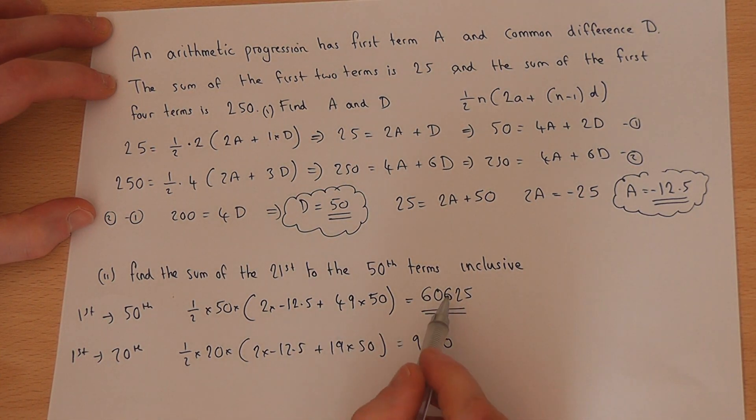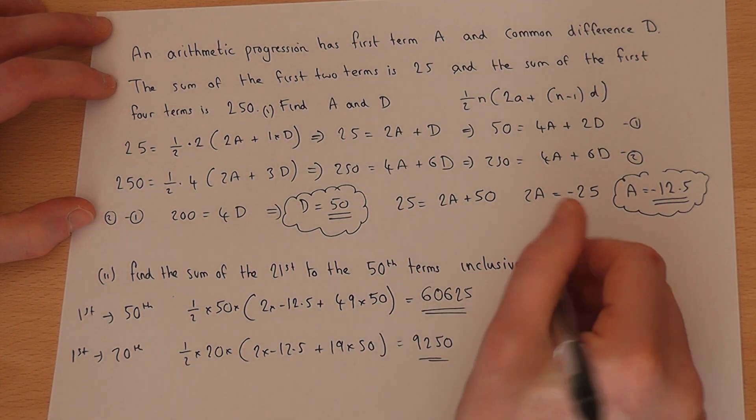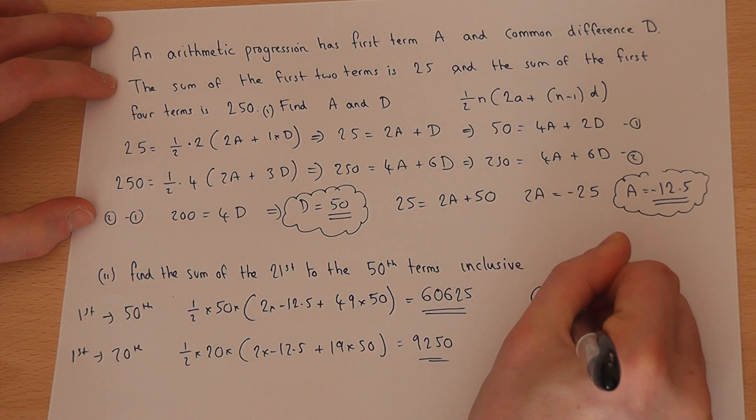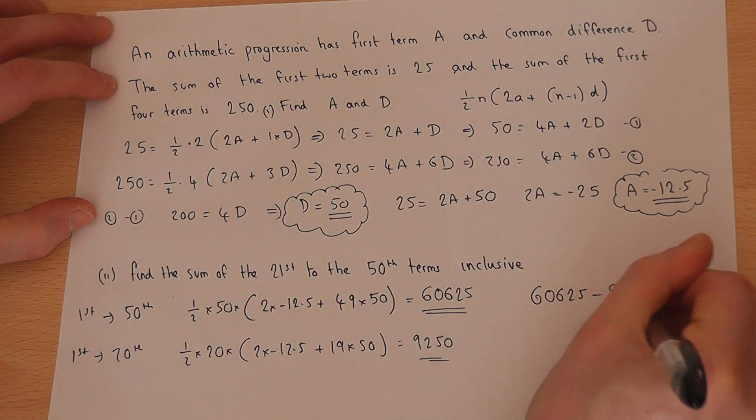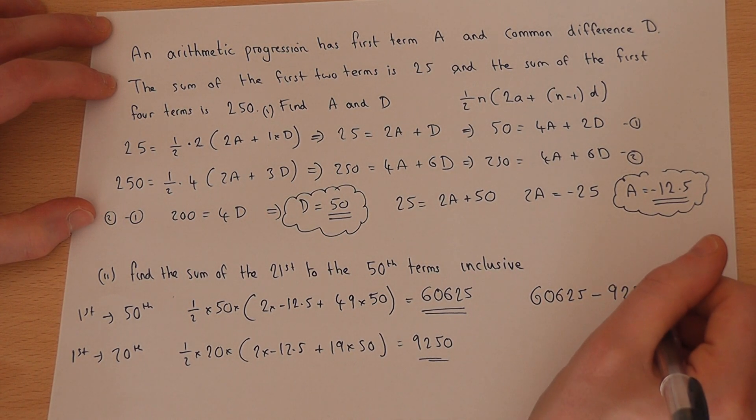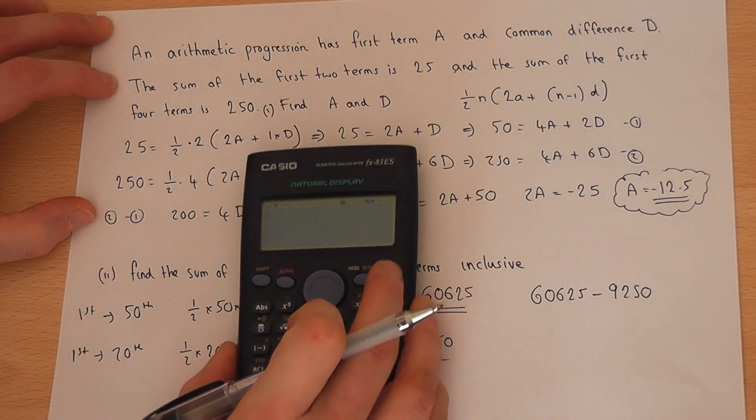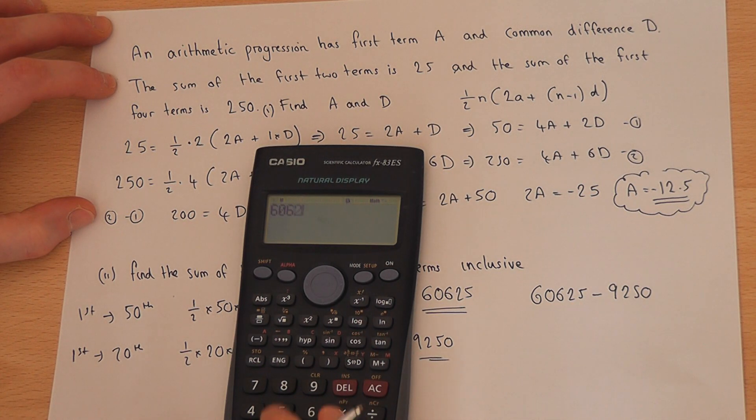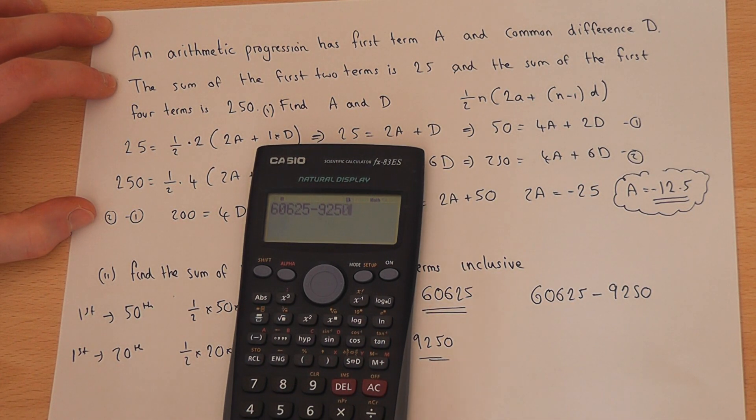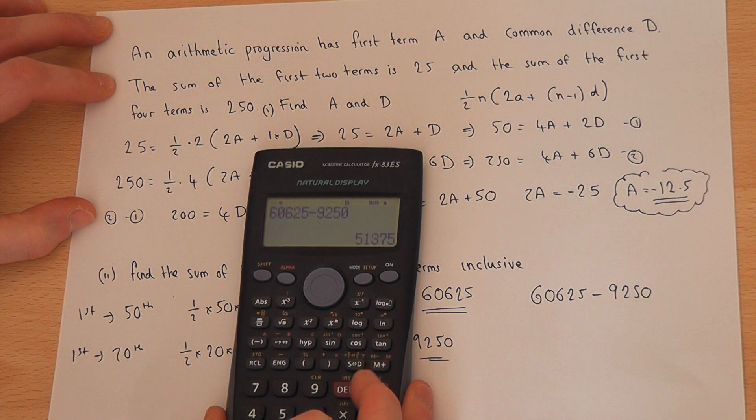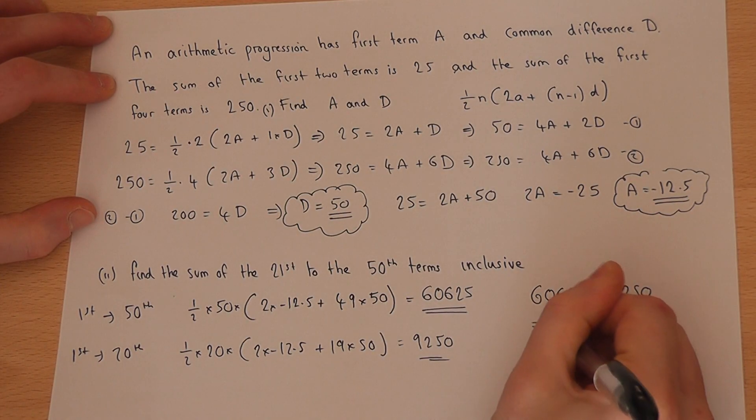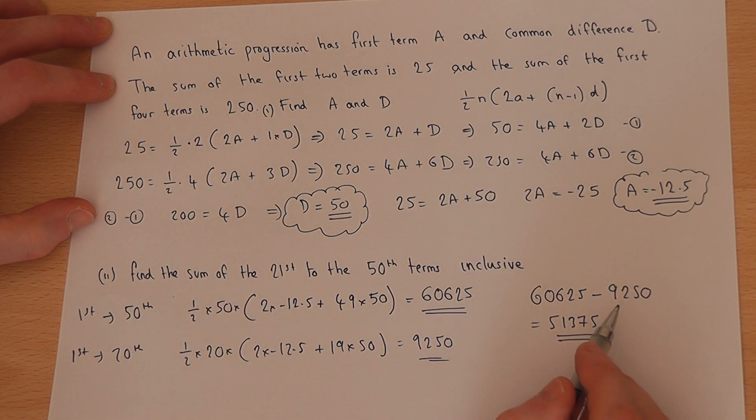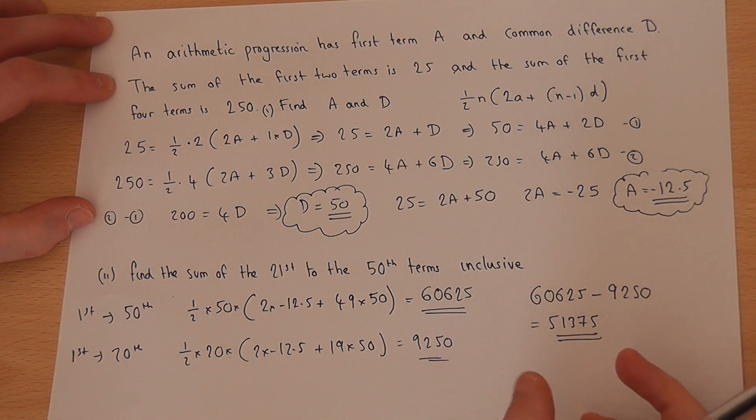So that's the sum of the first 50 terms. That's the sum of the first to the 20th. If I do 60625 and take away 9250, that will leave me with the 21st to the 50th. So 60625 take 9250 is 51375. So 51375 is the sum of the 21st to the 50th term inclusive.